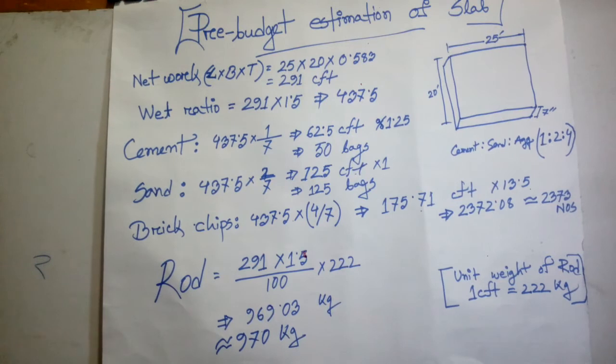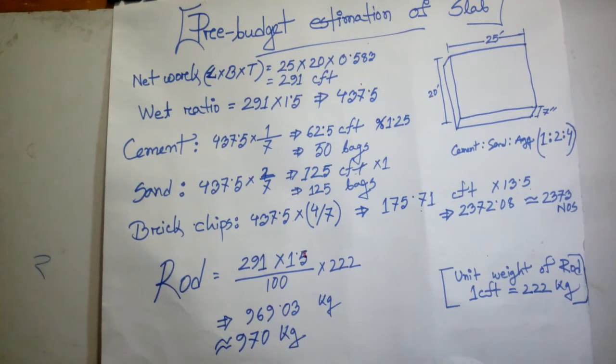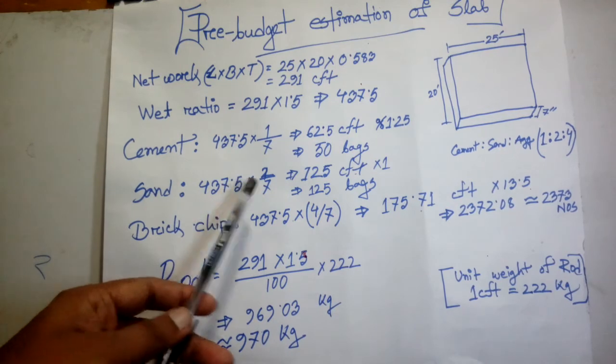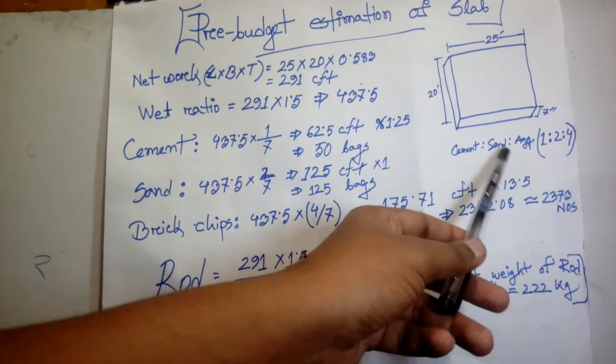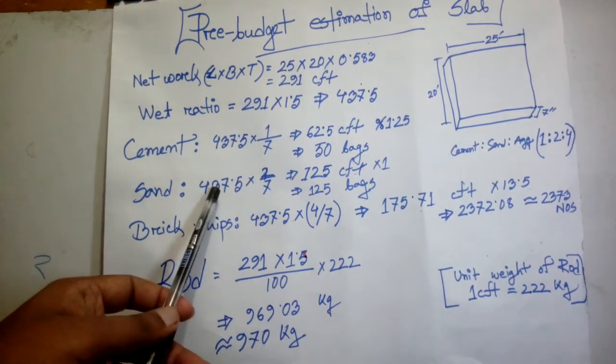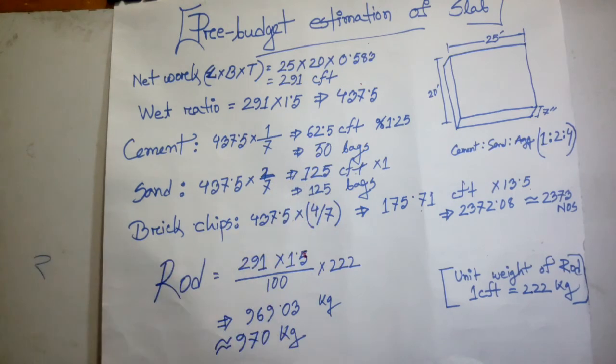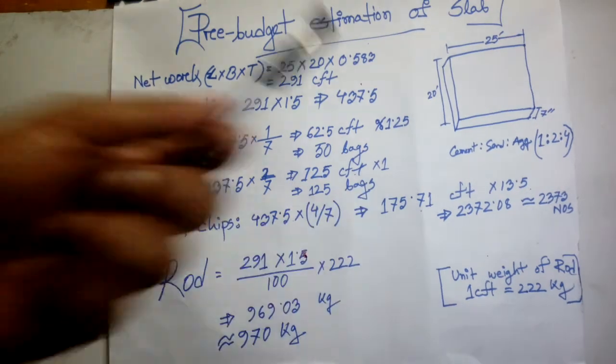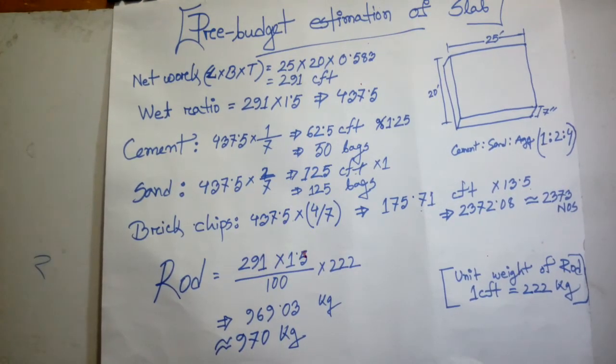For sand, the ratio is two parts. So 37.5 into two by seven equals 125 CFT. In Bangladesh, we know that for construction work, the extra value back is needed. So one bag extra, equal to one back of cement. The sand requirement is 125 CFT with the extra purchase value.